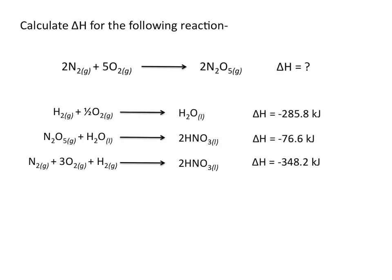Let's try another example. Calculate delta H for the following reaction: 2N2 plus 5O2 goes to 2N2O5. We're given 3 reactions listed below. Remember the first step is to modify these equations to more closely resemble the equation of interest.